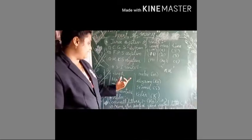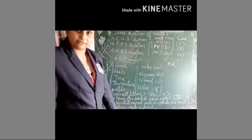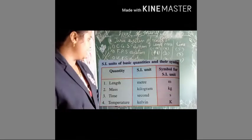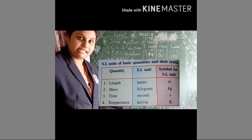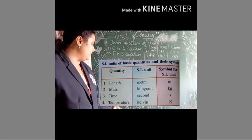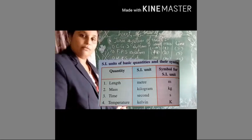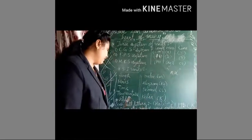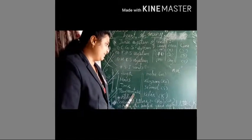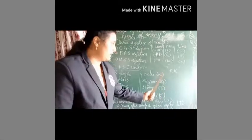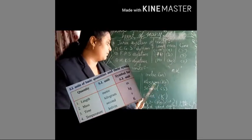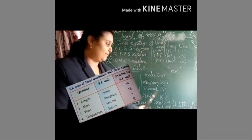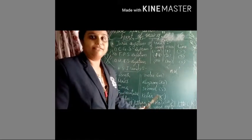For the four basic quantities: the SI unit of length is meter (m), mass is kilogram (kg), time is second (s), and temperature is Kelvin (K). These are the SI units and their symbols.